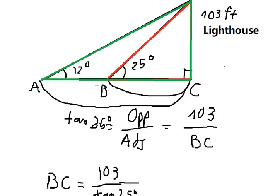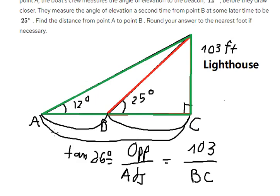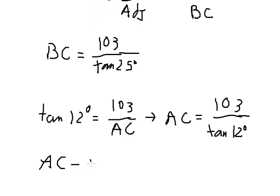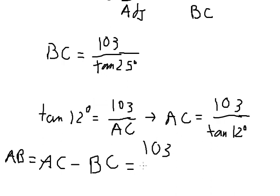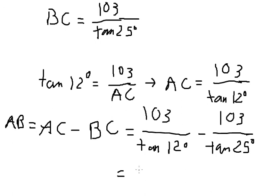So the distance from A to B equals AC minus BC, which is 103 over tan(12 degrees) minus 103 over tan(25 degrees). This gives us approximately 264 feet. That is the final answer. Thank you for watching.